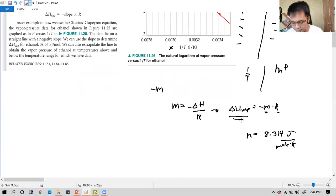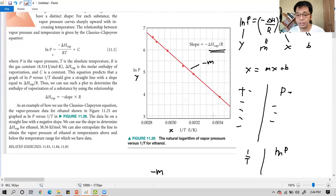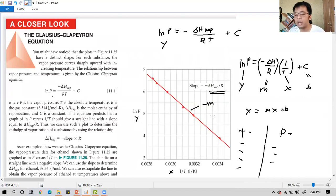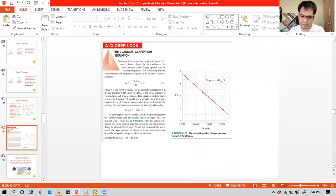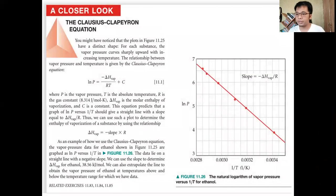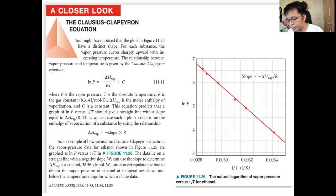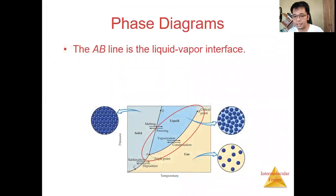I can't provide a worked example because this is just an introduction to the concept of the Clausius-Clapeyron equation. We're done with the Clausius-Clapeyron equation regarding vapor pressure and the relationship of temperature and pressure of a liquid. Now let's go to the phase diagram.